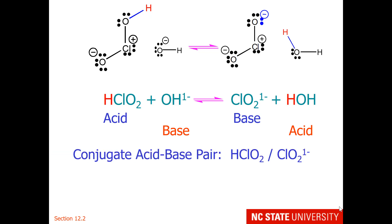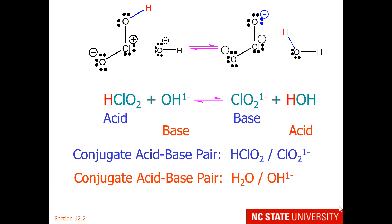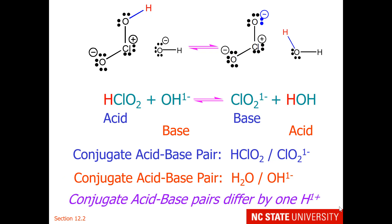Acid-base reactions are made up of two conjugate acid-base pairs. One pair is HClO₂ and ClO₂⁻. The other pair, listed acid first, is water and hydroxide. Conjugate acid-base pairs differ by a hydrogen ion, H⁺.